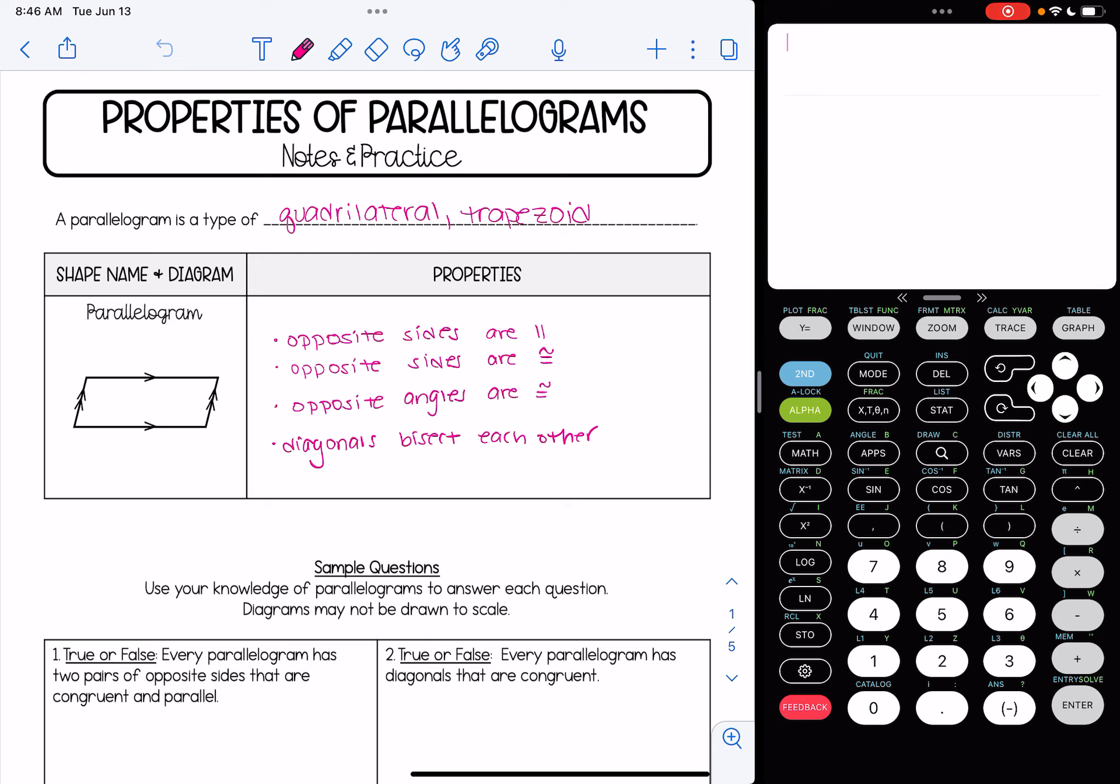That's because a trapezoid is sometimes defined as a quadrilateral that has at least one pair of parallel sides, and those sides being opposite, and that is true for a parallelogram. Since we are considering a parallelogram to be a quadrilateral and a trapezoid, that means it inherits all of their properties.